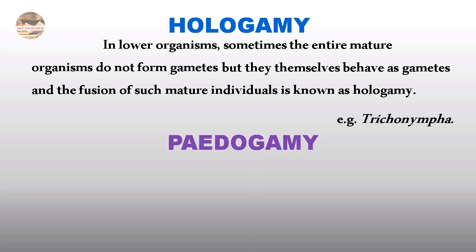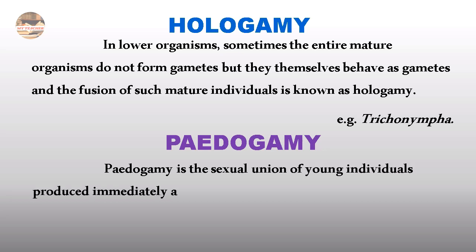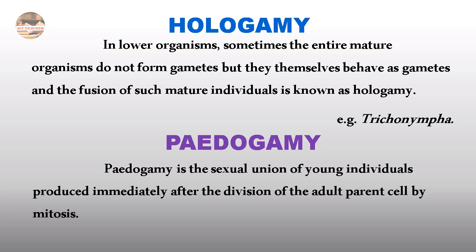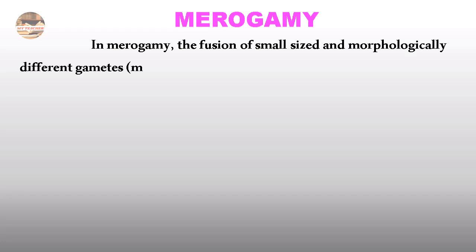Pedogamy is the sexual union of young individuals produced immediately after the division of the adult parent cell by mitosis. In Mirogamy, the fusion of small-sized and morphologically different gametes takes place.